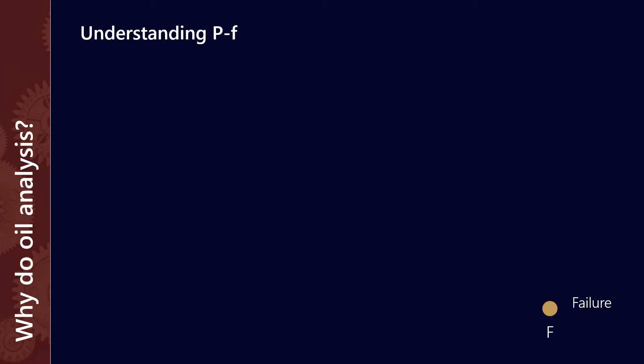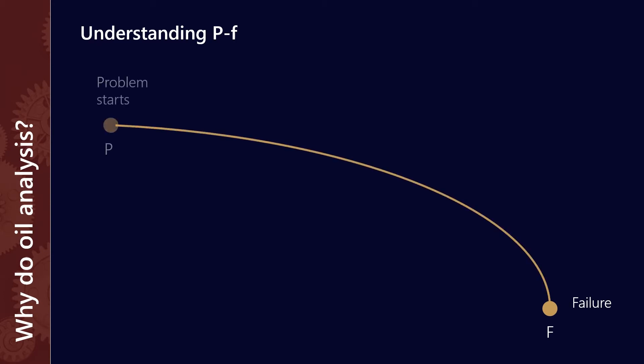When we talk about used oil analysis, it's helpful to understand the idea of the P-to-F curve. If you've not come across it before, here's a quick primer. What we're trying to avoid is some kind of failure — we'll call that F. Working backwards, we're trying to relate every failure to the initiation of the problem, backtracking to where it all started.